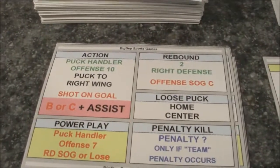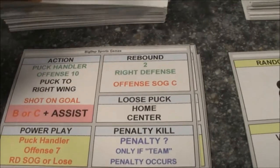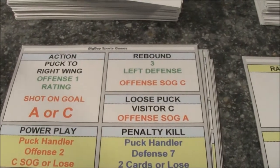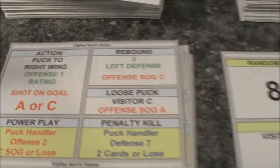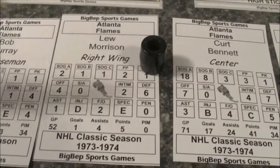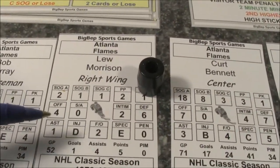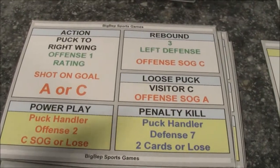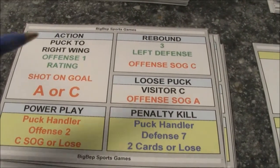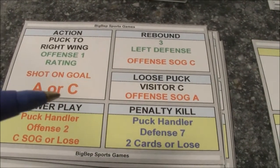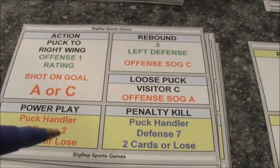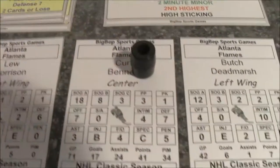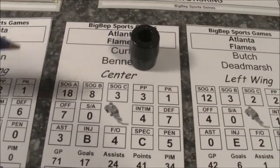For example, the puck goes to the right wing, and if you're checking his offense rating and it meets the criteria — most times you don't even have to look at the card because the offense rating is usually between 4 and 7 — if he meets the criteria, it's a shot on goal A. If he did not meet the criteria, it would be a shot on goal B. Let's give it to Kurt Bennett — he would have a shot on goal A, his chances would be 1 to 18.